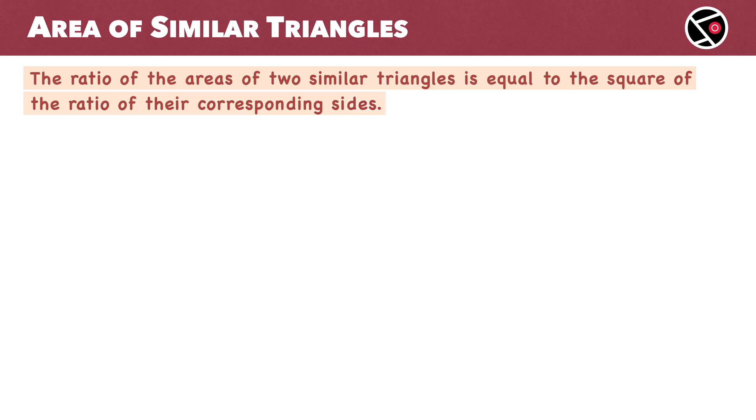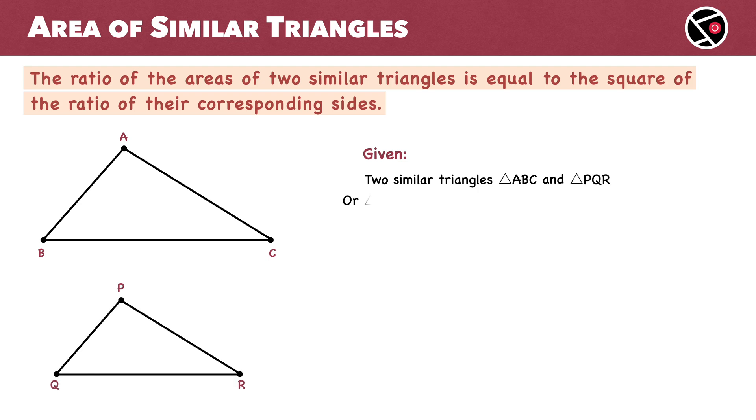So, what do we have? We have two similar triangles: Triangle ABC and Triangle PQR. Triangle ABC is similar to Triangle PQR. Since corresponding sides of similar triangles are proportional, the ratio of corresponding sides is equal.